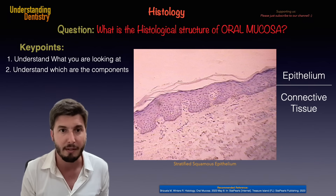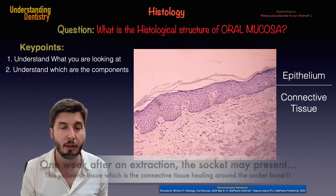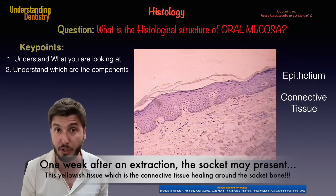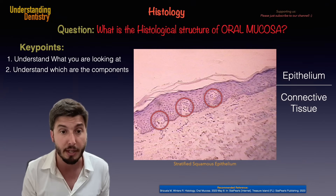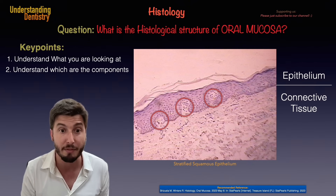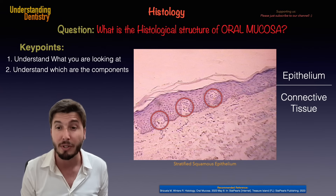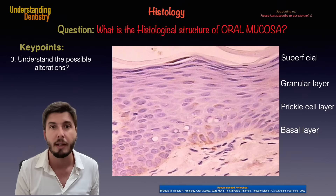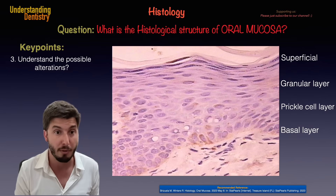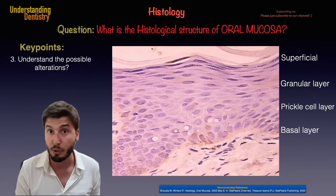We can find blood vessels and even small mucosal glands, and of course different amounts of fibrous tissue. It's also normal to find those interdigitations visible in the red circles, because that's a way to increase the surface of epithelial attachment to the lamina propria. So we need to understand about possible alterations — if we know what is normal, then we will understand what is not normal.